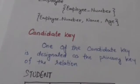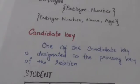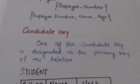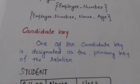A relation schema may have more than one key. In this case, each of the keys is called a candidate key. One of the candidate keys is designated as the primary key of the relation.